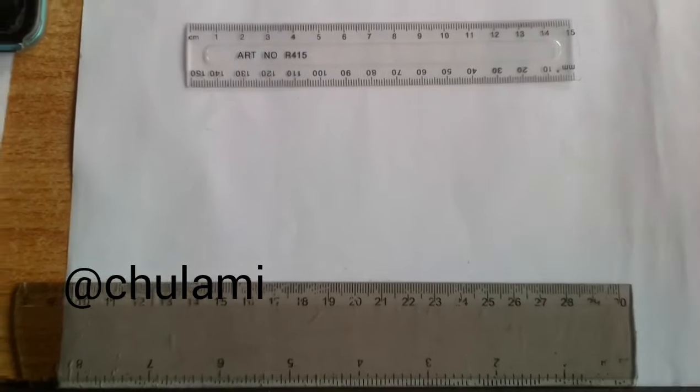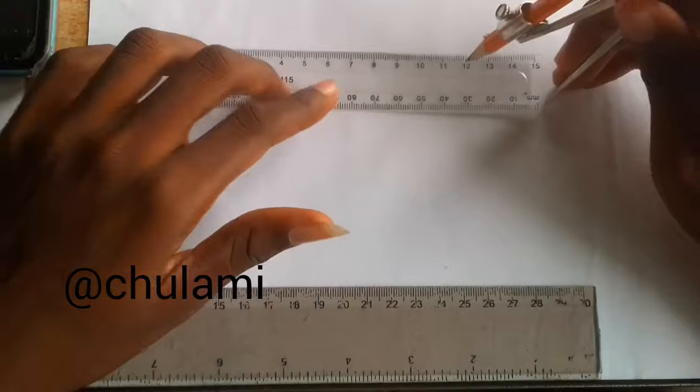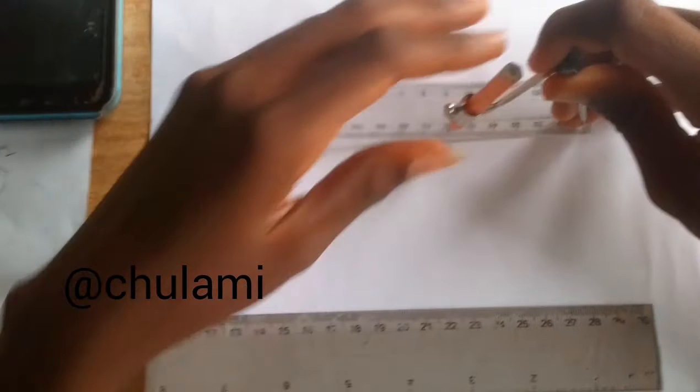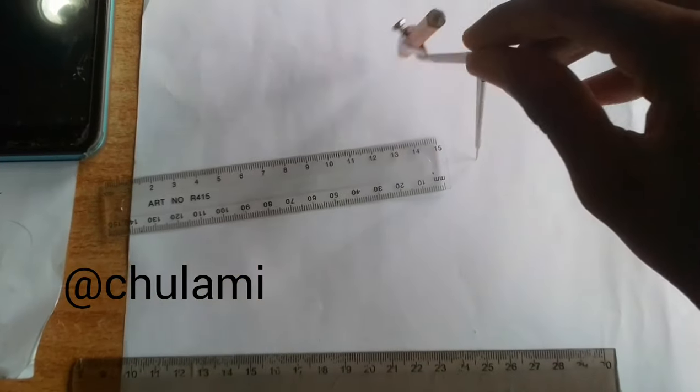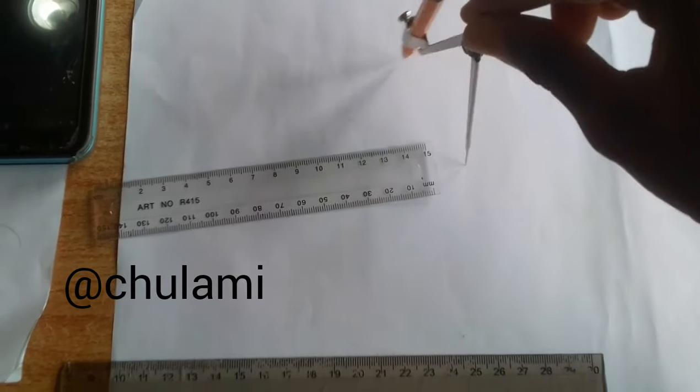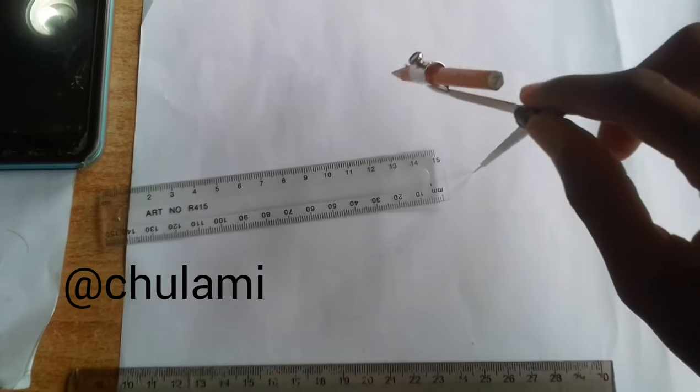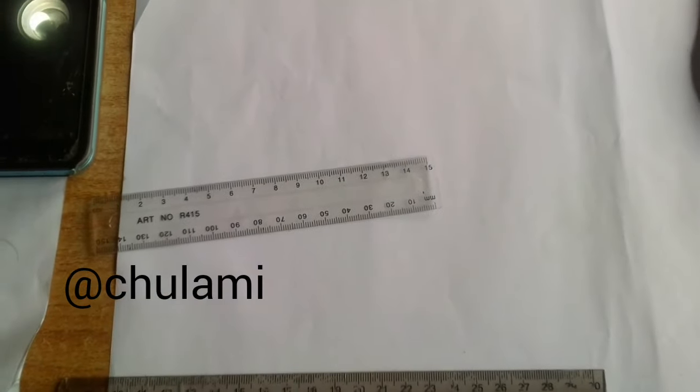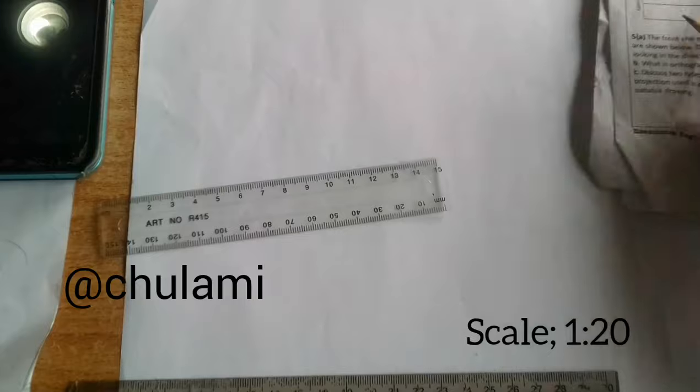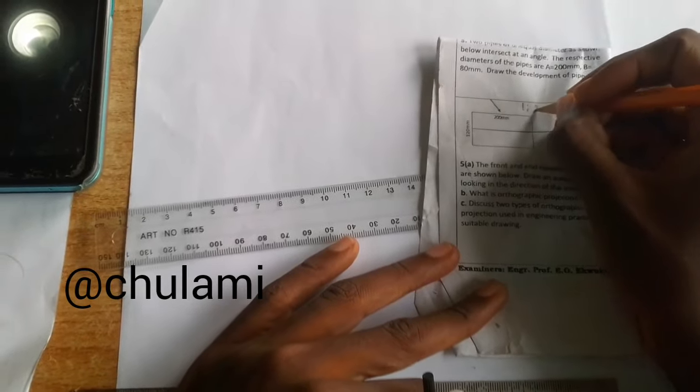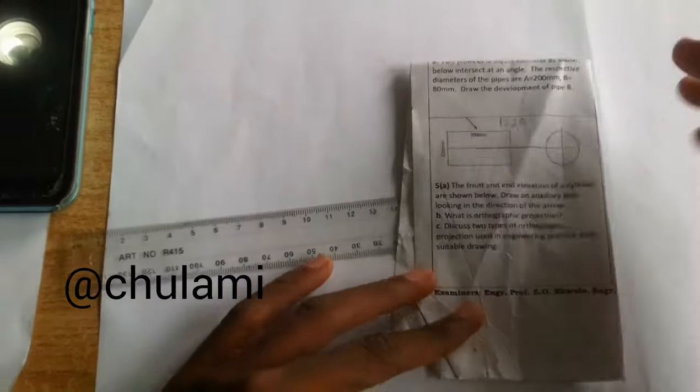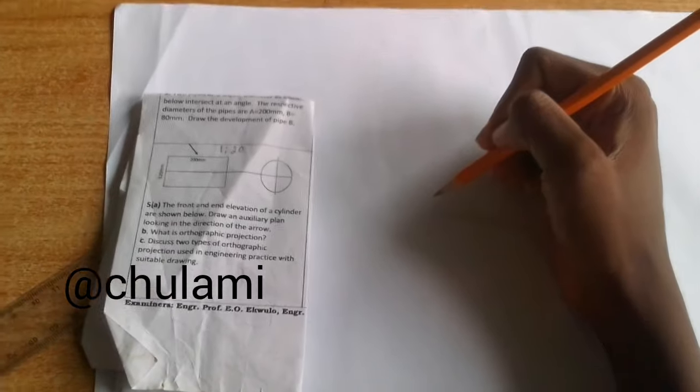Now, the radius is 60mm. If you take your compass and measure 60mm, it's extremely big. You'll draw an extremely big circle. So in this regard, we have to scale our diagram.